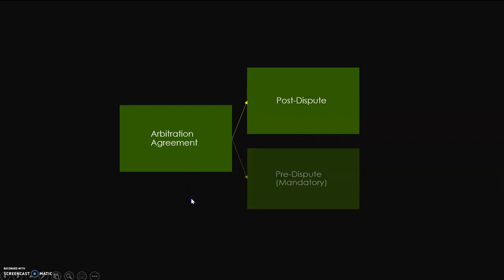There are two ways that parties end up in an arbitration. The first is post-dispute arbitration, which essentially means that parties have a dispute, realize they have a dispute, and now have a choice — whether to go to court or tribunal, or to hire an arbitrator and go through the arbitration process. Post-dispute means the decision to go to arbitration is more of a voluntary decision. Parties look at the pros and cons of different options and mutually decide that arbitration is the best approach, wanting a speedy resolution in a matter of months.